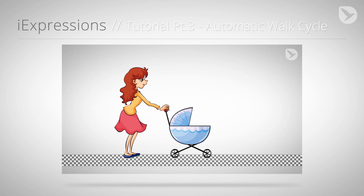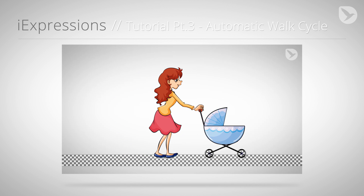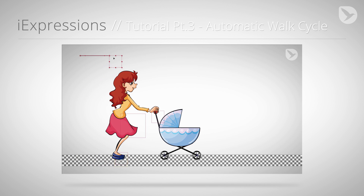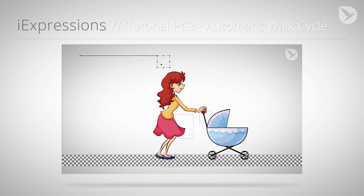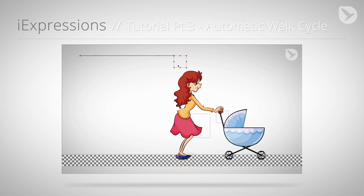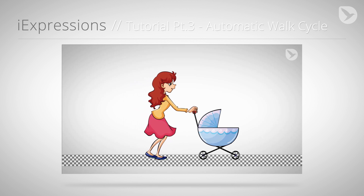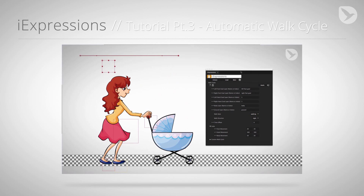In the third part we create an automatic walk cycle. Automatic means you just keyframe the position of the character and the rig animates the legs and the body automatically. All we need for this is one powerful eye expression, and the tedious keyframing or moonwalking characters are all water under the bridge.